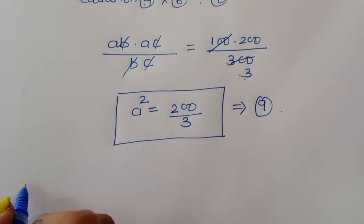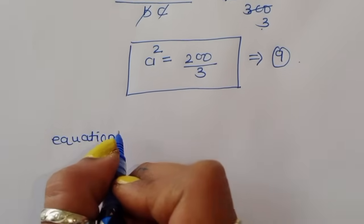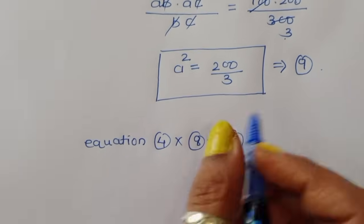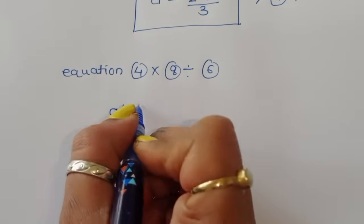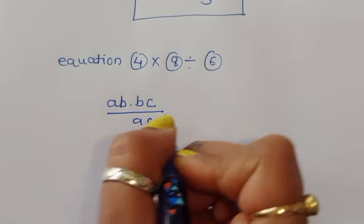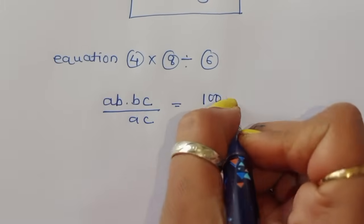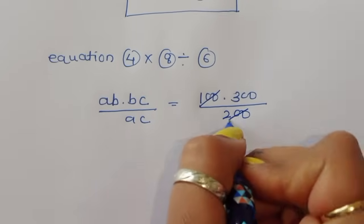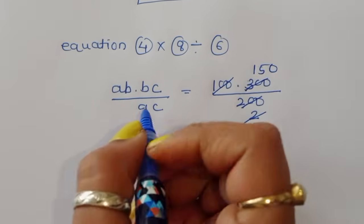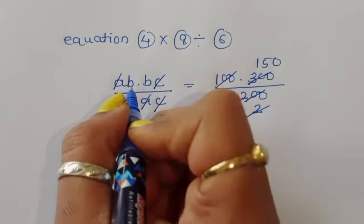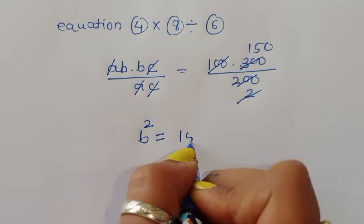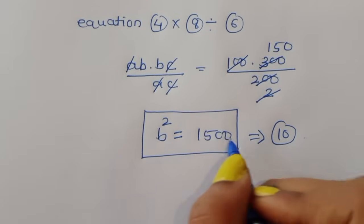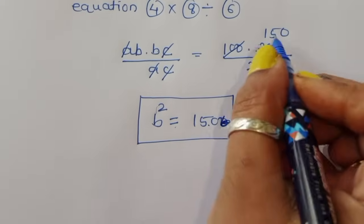Next, multiply equation 4 with equation 8, divided by equation 6: (AB times BC) divided by AC equals (100 times 300) divided by 200. Simplifying, 100 divided into 200 gives a factor of 2, leaving 150. Here A cancels from A and C cancels from C, giving B squared equal to 150. This is equation number 10.